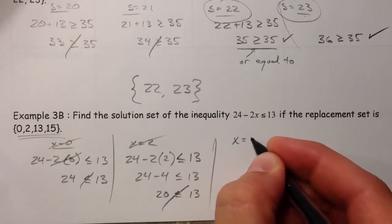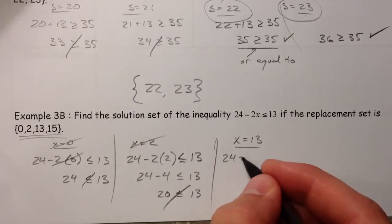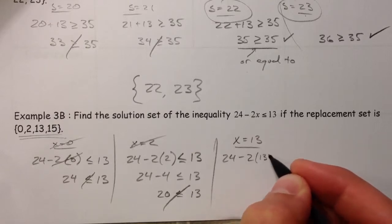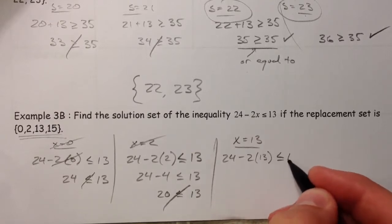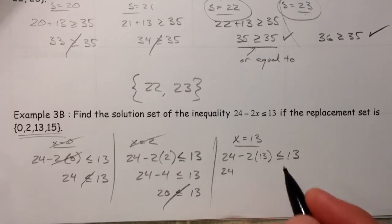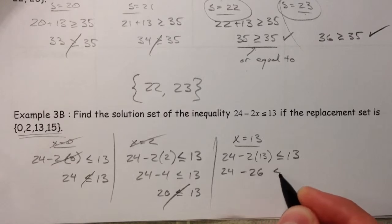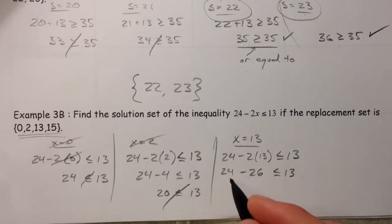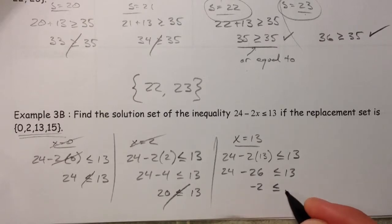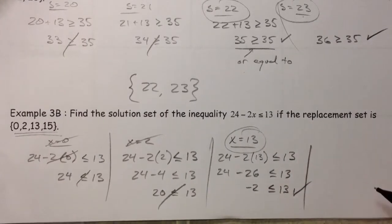What about x equals 13? 24 minus 2 times 13. Is that less than or equal to 13? Well, 2 times 13 is 26. And we're going to subtract 26. So, we have negative 2, 24 minus 26. And that is true. That's a true statement. So, we're going to keep the 13. That is part of our solution set.